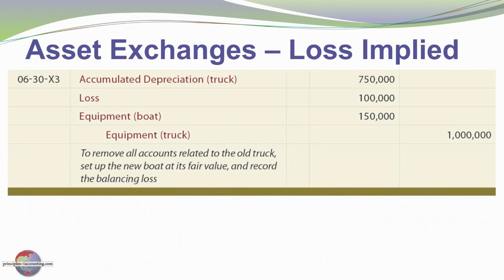Here's the journal entry. We remove the old truck from the books by crediting the truck $1 million along with a debit to its associated accumulated depreciation of $750,000. We record the new asset — the boat — at $150,000. And we need a debit of $100,000 to balance the entry, which represents the loss recognition.